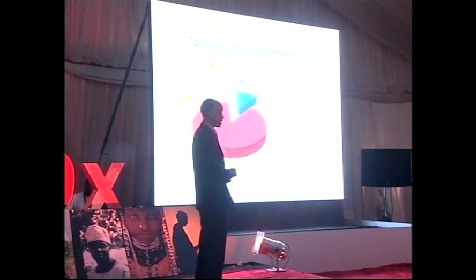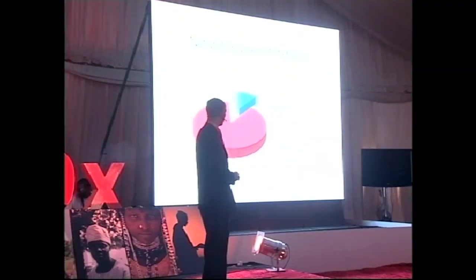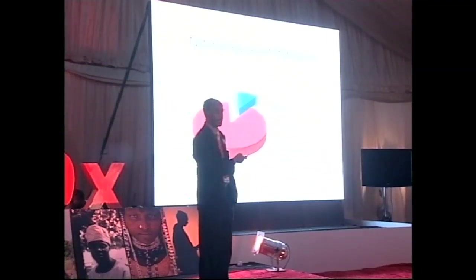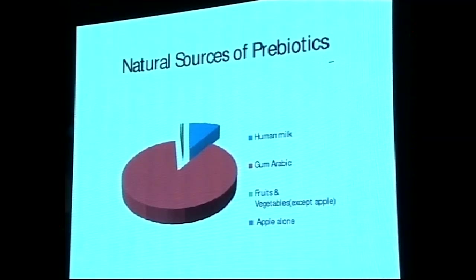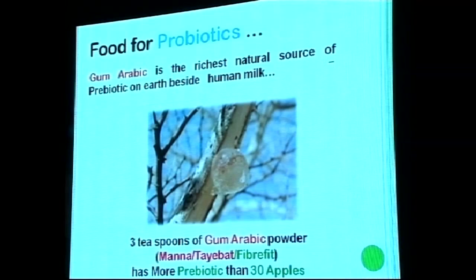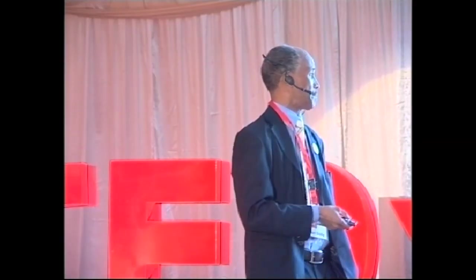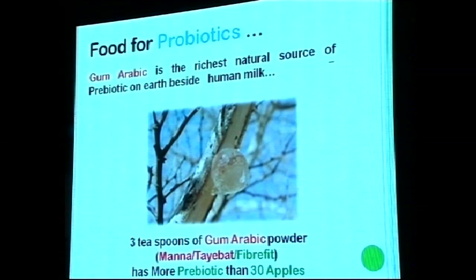As you can see, gum arabic's percentage of prebiotic is very high compared to human milk. All other fruits, vegetables, and cereals do not have a sizable amount to effectively remove fiber from the human body. For example, three teaspoons of gum arabic powder contains more prebiotic than 30 apples.